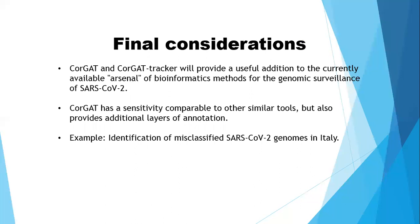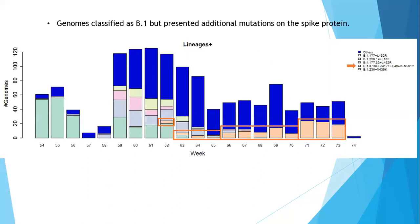For example, thanks to the application of our set of tools, we were able to identify a collection of Italy-specific misclassified SARS-CoV-2 genomes. More in detail, these genomes were classified as B.1 by classical SARS-CoV-2 mutation methods; however, our system highlighted how they presented additional mutations in the spike protein, as you can see from the reported bar plot.